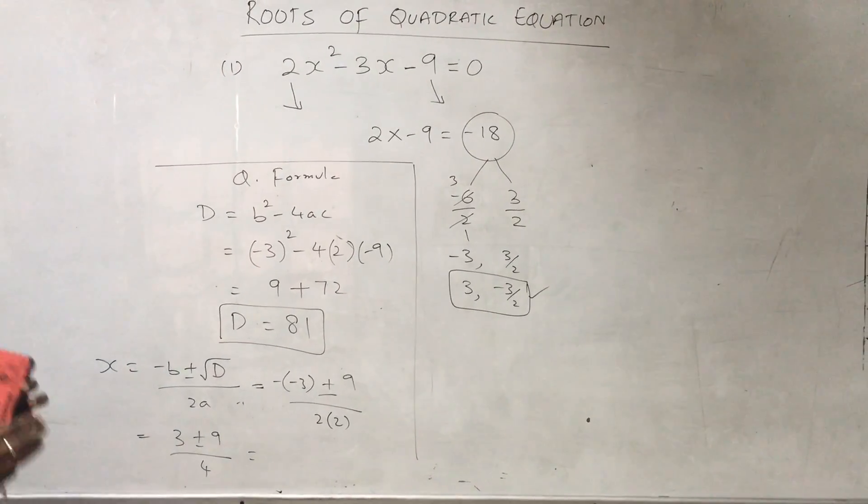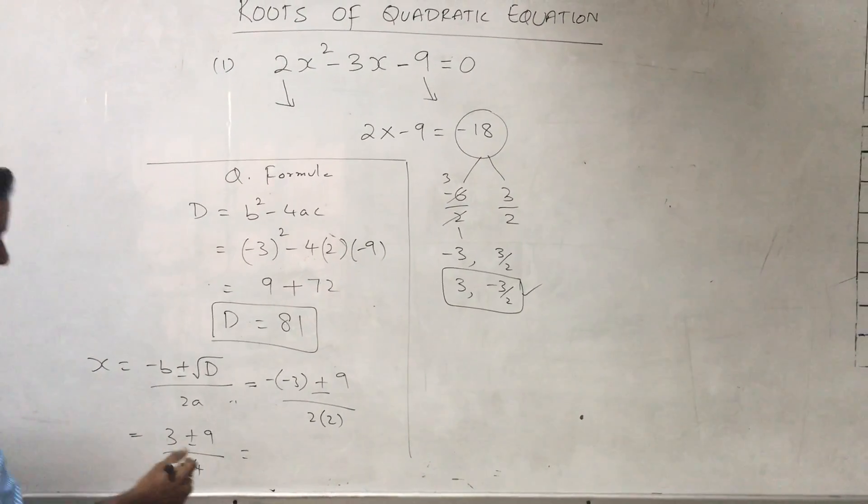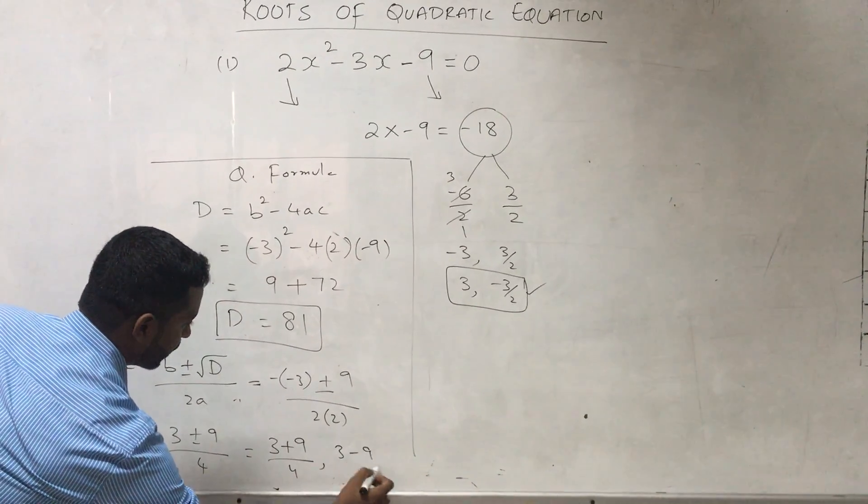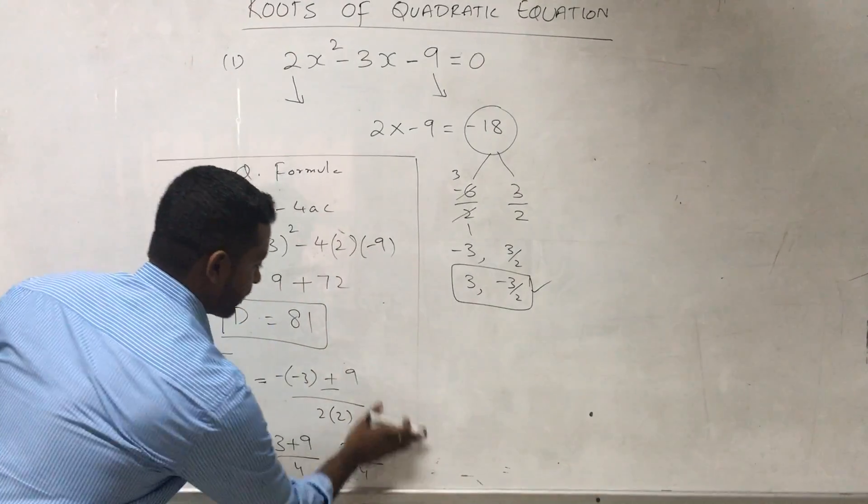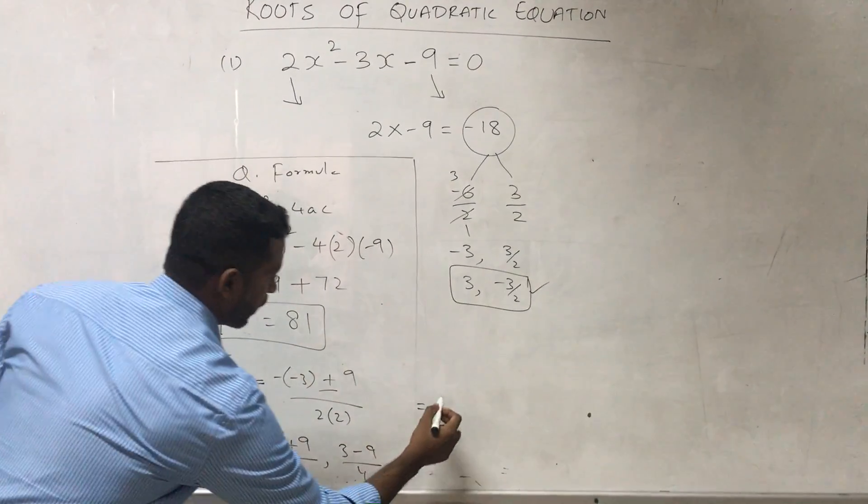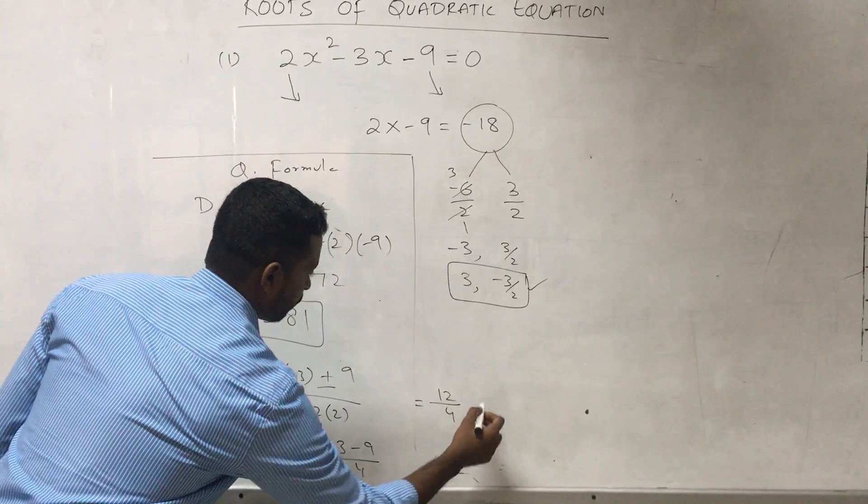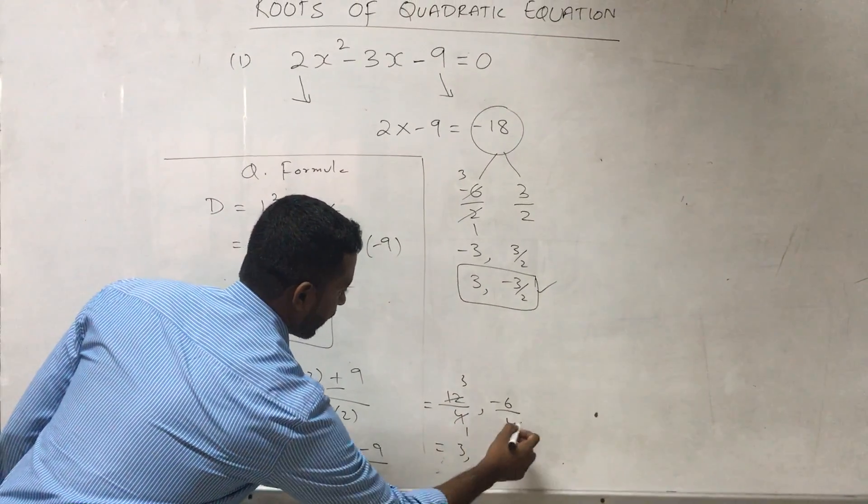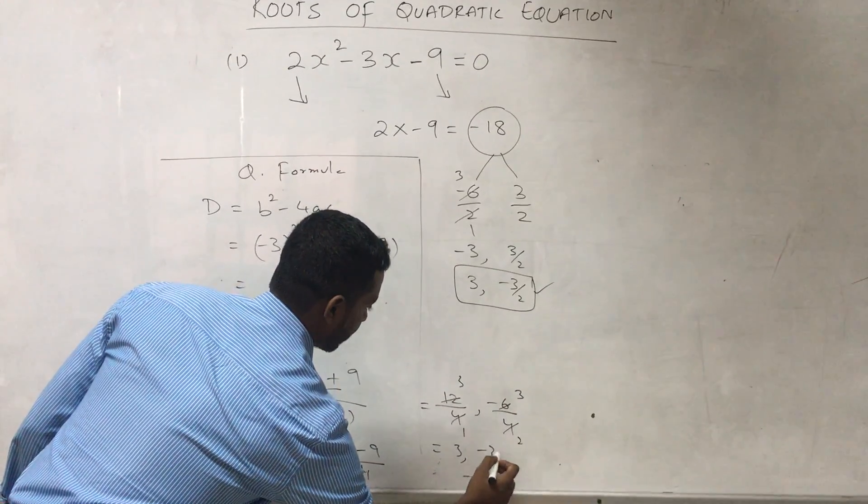You need to take positive and negative 9 along with 3, one time with positive and one time with negative. Simplifying: 9 plus 3 is 12 over 4, and 3 minus 9 is -6 over 4. That gives us 3 and -3/2.